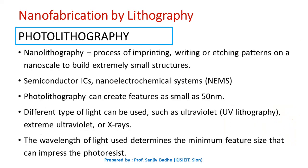In nanotechnology, lithography technique is used as a process of imprinting, writing, or etching patterns on a nanoscale to build extremely small structures. For patterning at a nanoscale, several lithographic techniques can be used. Some of the mostly used techniques are photolithography, which makes use of light, and electron beam lithography, which makes use of electron beam for the pattern transferring process. In the fabrication of semiconductor ICs (integrated chips), which contain millions of components, or nano electrochemical systems, this photolithography technique is very useful and can create features as small as 50 nanometers.